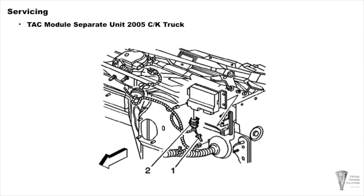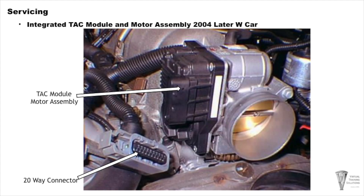Here's a look at how the separate TAC module would be laid out — this happens to be a 2005 CK truck, a Silverado or Sierra, with a standalone module. This is a W car like a Grand Prix or Regal, where the TAC module and motor assembly are one assembly — the APP input goes directly to the throttle plates with all electronics built in, including two throttle position sensors.